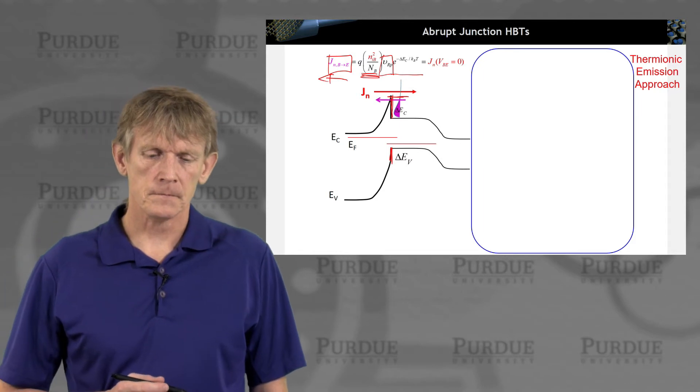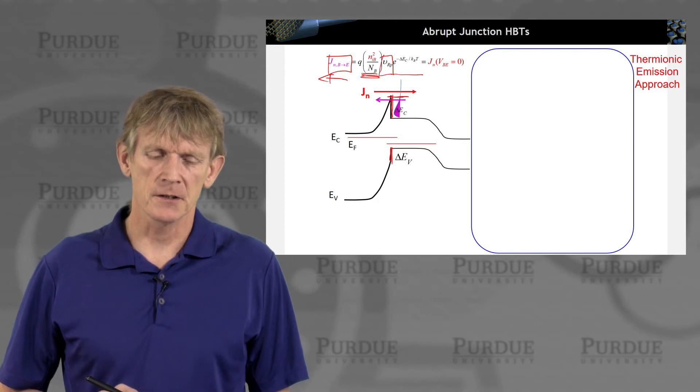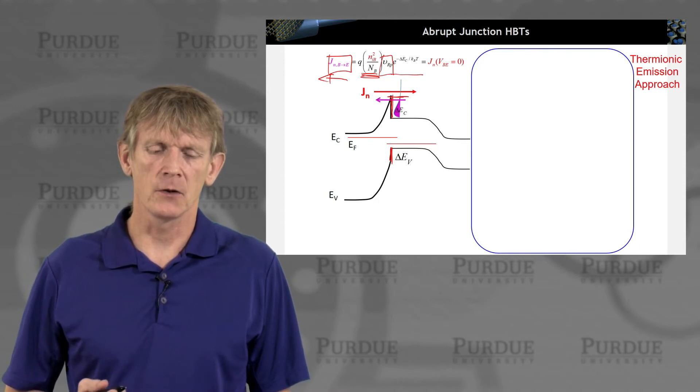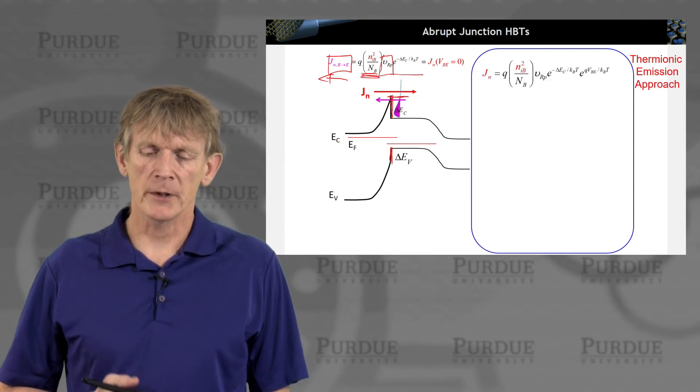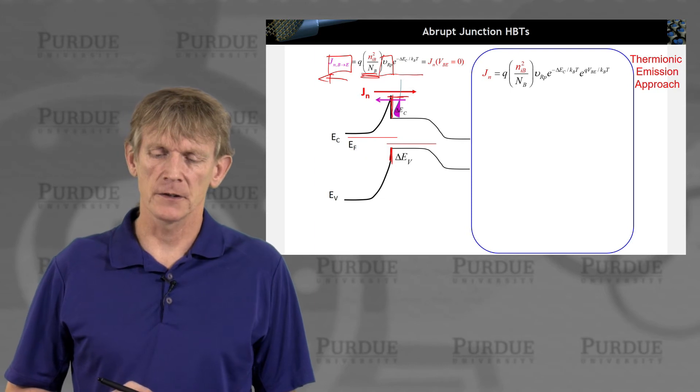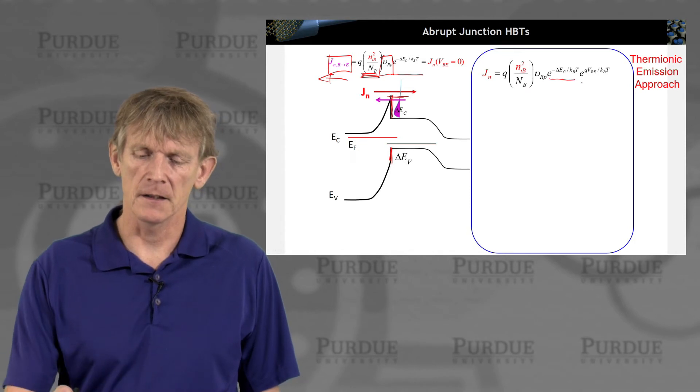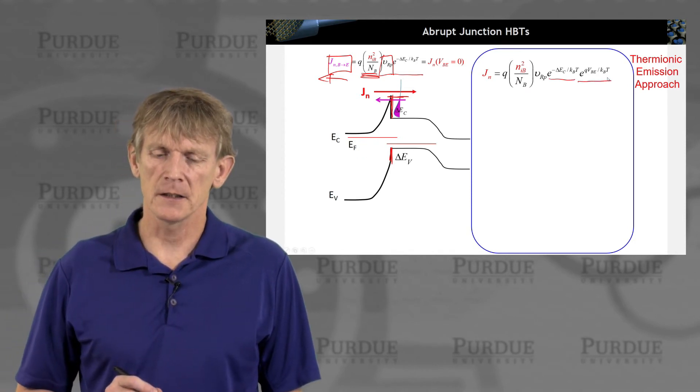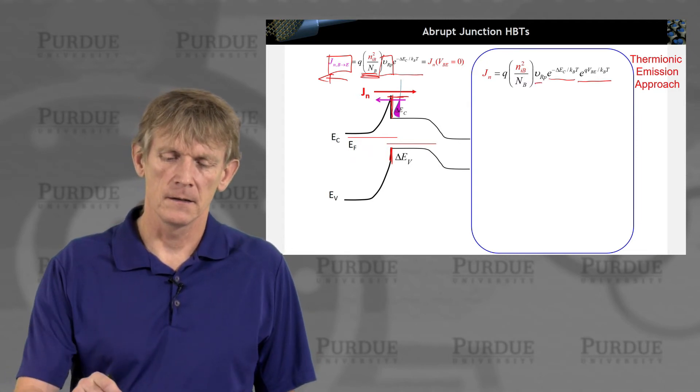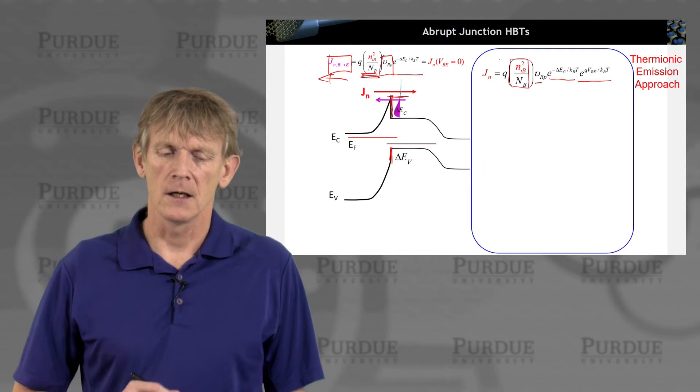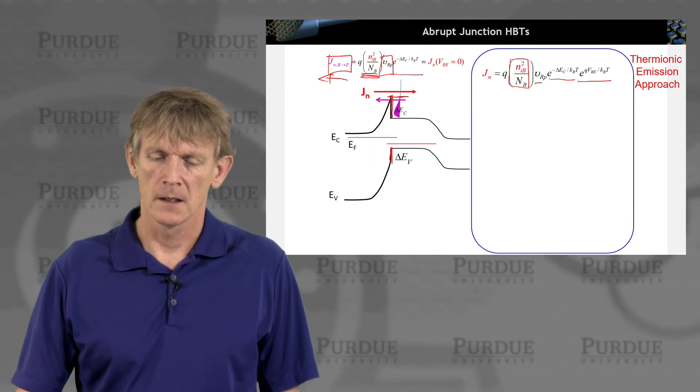That must be the same as what we did in the metal semiconductor junction before. That must be, under zero bias, the electron current. We can write down this electron current flowing forward, and it has this conduction band offset in it, the forward bias exponential, the velocity, and effectively the minority carriers on the base side in the Nib over Nb.